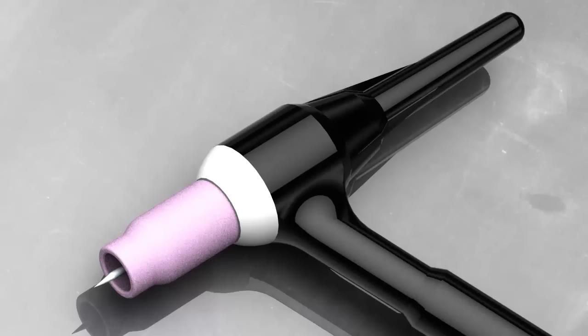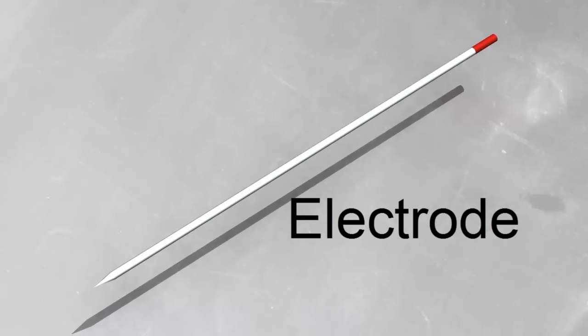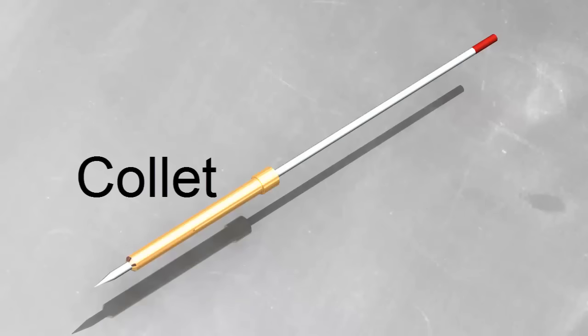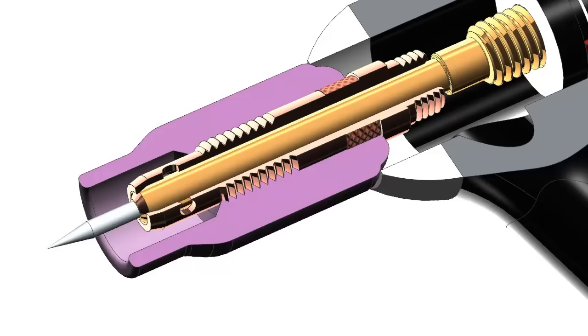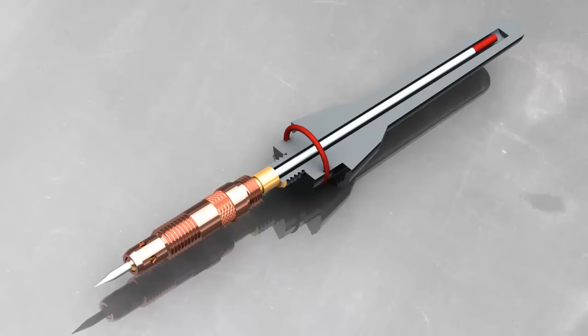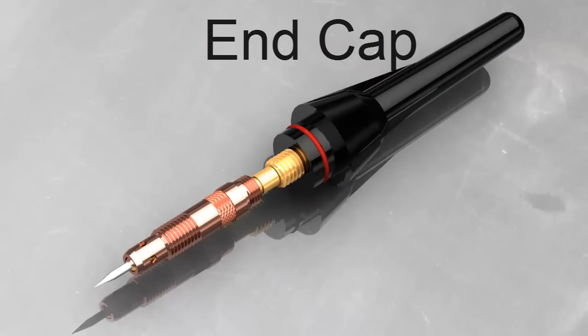So here's the tungsten electrode being held in a TIG torch. The electrode slips into a collet, and the collet tightens up against the collet body. You can adjust the length that the electrode sticks out of the holder by loosening up the end cap. When you tighten the end cap, the collet clamps down on the electrode.